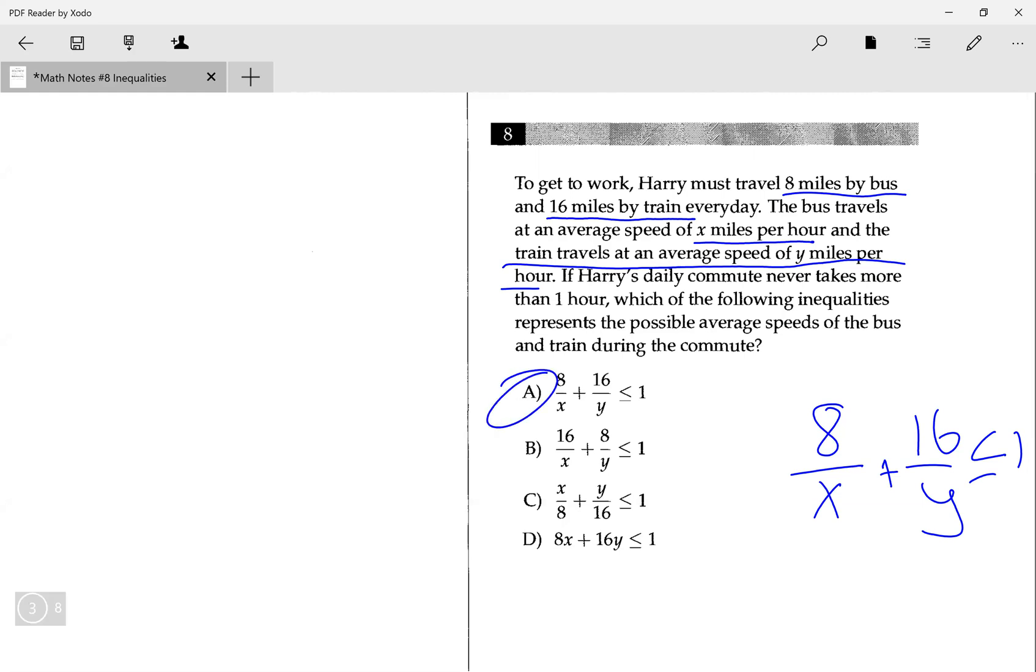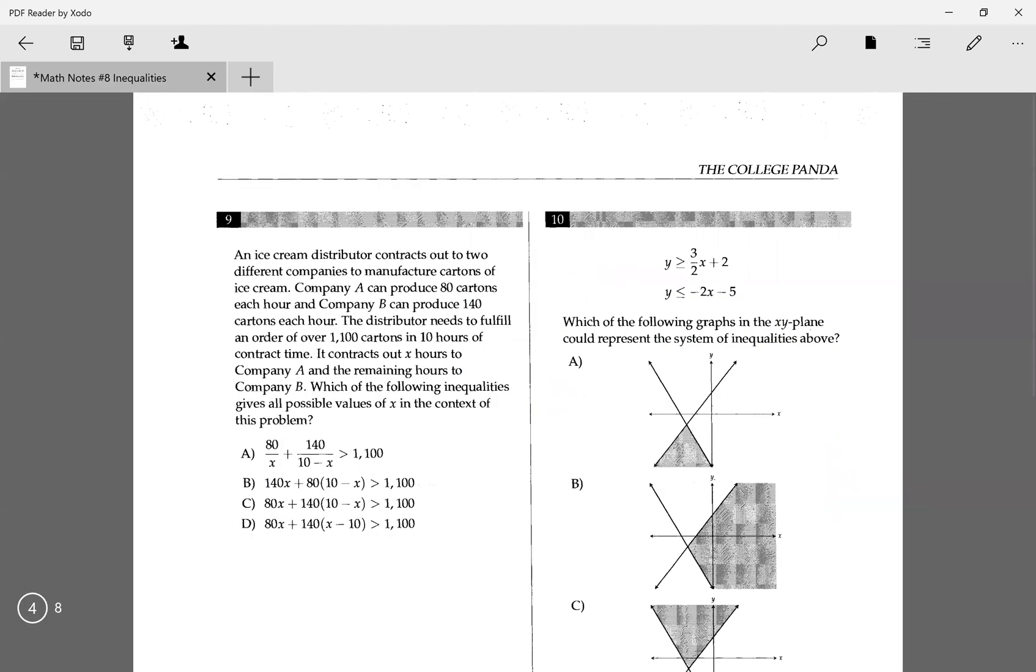Even if you didn't write this equation while I was reading the question, after you read the question, you could tell, okay, so if I want to find time, I want to do miles over miles per hour to find time. So I would do 8 over x plus 16 over y less than or equal to 1.